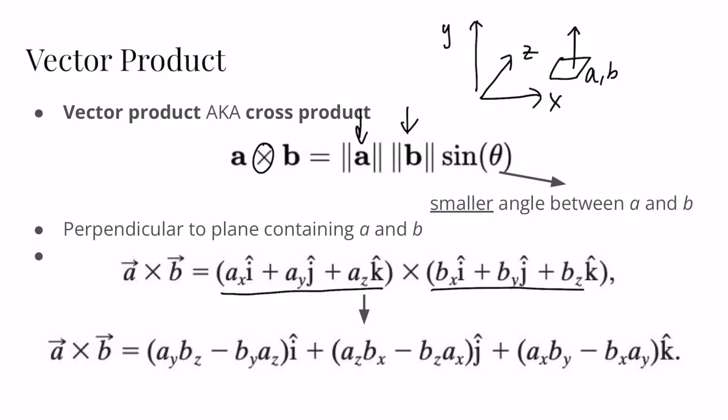The full decomposition of the cross product multiplies each component of A with all the components of B, yielding the long equation at the bottom. An easy way to remember this: to get the i component of the cross product, take the y component of the first vector times the z component of the second, minus the z component of the first times the y component of the second. The pattern cycles: for i you use j and k; for j you use k and i; for k you use i and j — as shown at the bottom.